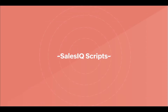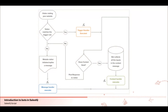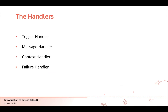Moving on to the next most important platform — the most powerful one — the SalesIQ Scripts platform. It is a bot building platform that uses Deluge as its online scripting language, mostly adaptive software development: very less talk, more action, and lots of testing. With this platform you can create the bot of your dreams — customizing every single feature from scratch to match your business requirements. This platform mainly functions on something called handlers, where the code for the bot is added to define all functionalities. There are four handlers: the trigger handler, message handler, context handler, and the failure handler.